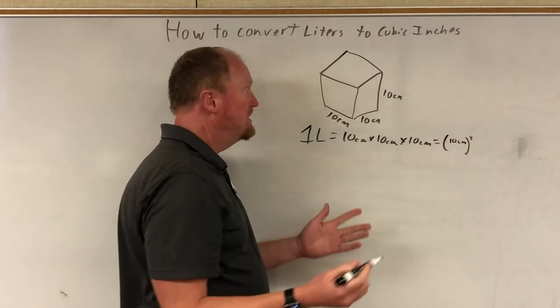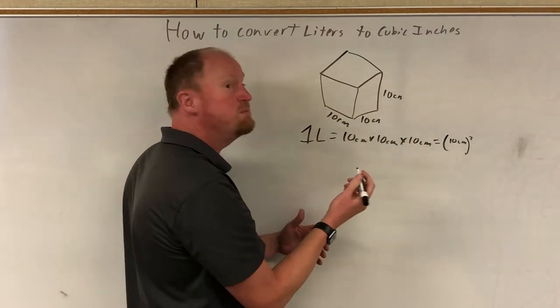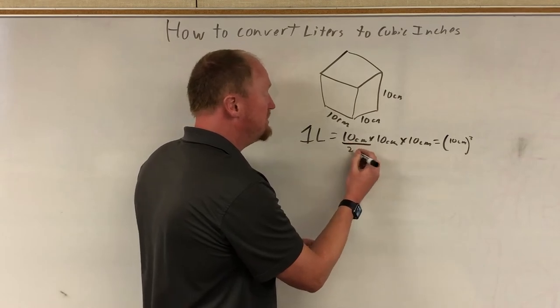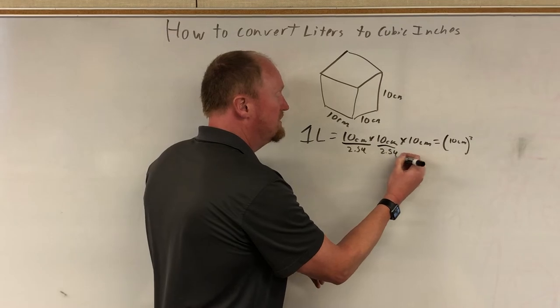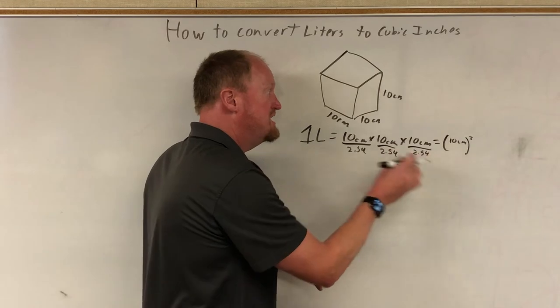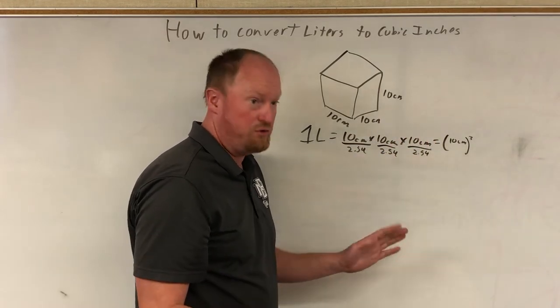Now what we're going to do is we're going to change the centimeters to inches. So there are 2.54 centimeters in every inch, so you divide each part: 2.54, 2.54, 2.54. Remember, you got to divide this first because if you multiply these all together and just divide it by 2.54, you're gonna get something wildly wrong.